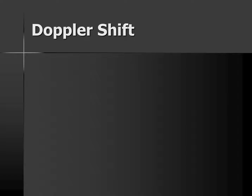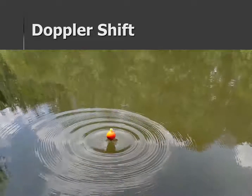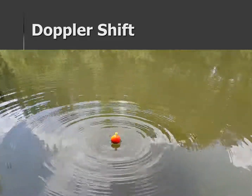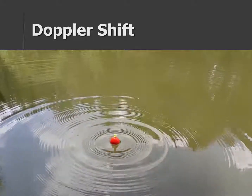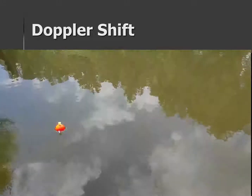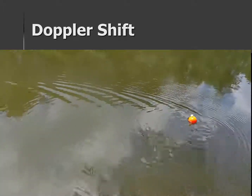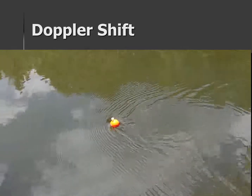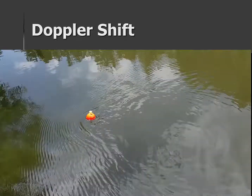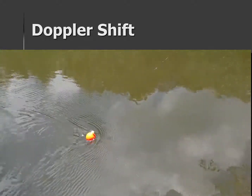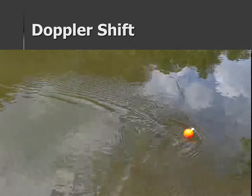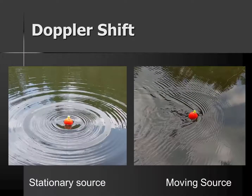Doppler shift is the last method for determining distance to stars. Have you ever been fishing or seen something move up and down in the water? Note this fishing float — as it moves up and down, it creates ripples. What happens if the float is put into motion? Watch as the fishing float moves back and forth. Notice what happens to the ripples on the leading edge and on the trailing edge. With a stationary source, the ripples go out in concentric circles, but with a moving source, the ripples bunch up on the leading edge and stretch out on the trailing edge.